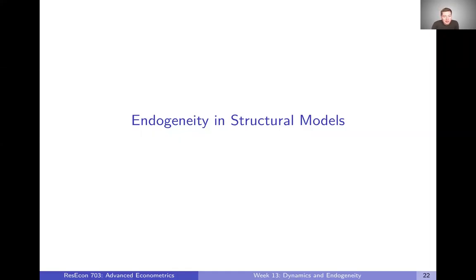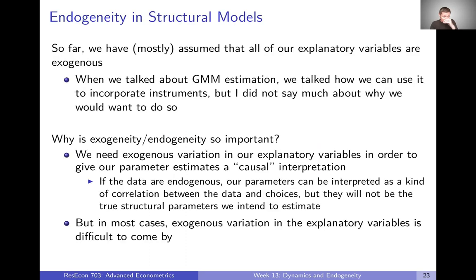We're going to shift gears and talk about endogeneity in structural models — specifically in the discrete choice structural models we've been discussing all semester. So far, we have mostly assumed that we just have exogenous explanatory variables. When we talked about GMM, we did talk about incorporating instruments, but we didn't say a whole lot about why we would actually want to do that. Now we're going to say more about it.